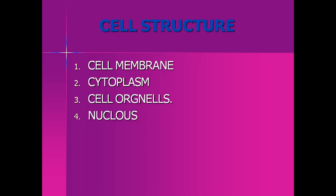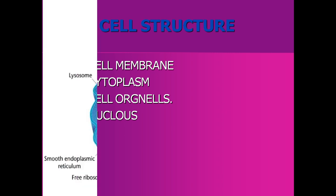Now, the structure of a typical cell. A typical cell consists of four main parts: cell membrane, cytoplasm, cell organelles, and nucleus. Let us explain these parts of the cell through a diagram.